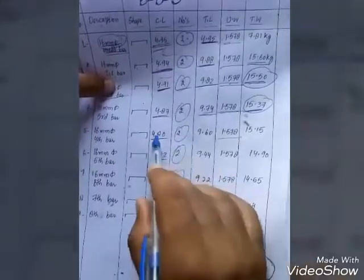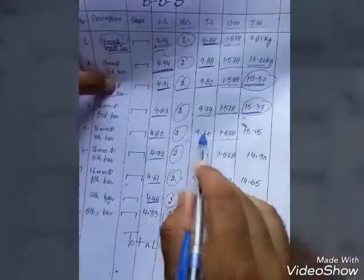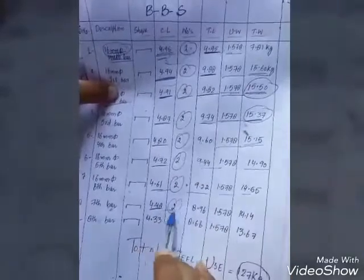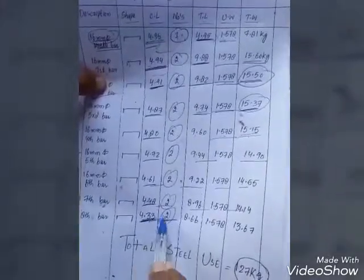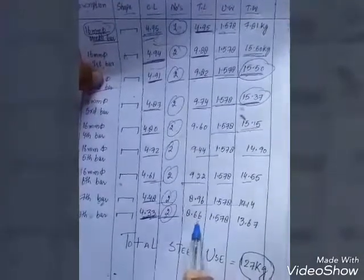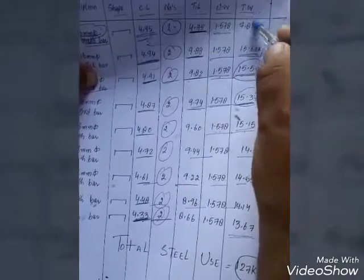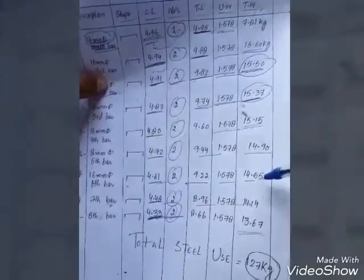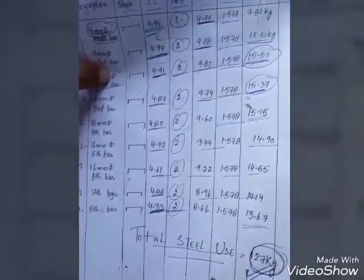For the fifth, sixth, and seventh bars the same procedure applies. For the eighth bar, cutting length is 4.33 meters, 2 bars, total length 8.66 meters, unit weight 1.578, total weight 13.67 kg. Finally, we add all the individual weights together to get the grand total steel weight of 127 kg.